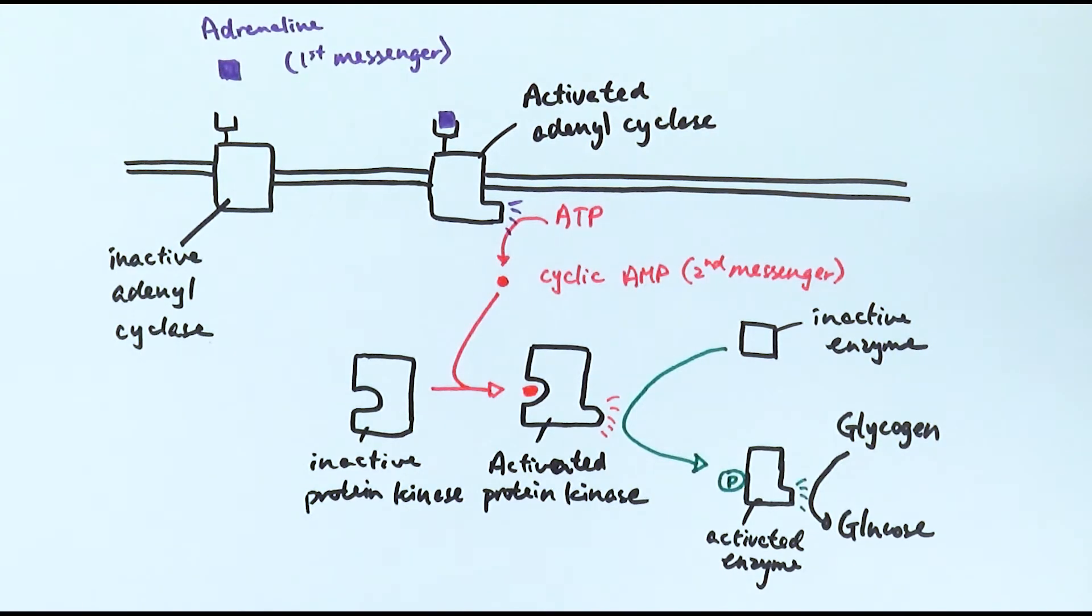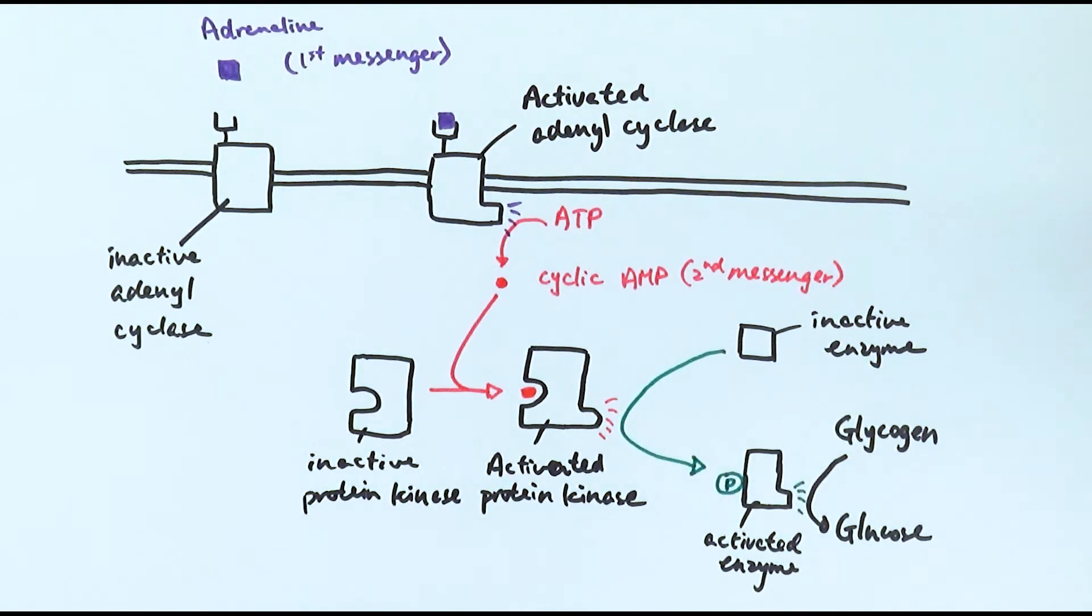The cAMP will then bind to protein kinases and activate them to phosphorylate and activate other enzymes inside the cell. Those activated enzymes can then go on to activate more enzymes or to do the actual action that they are supposed to do, for example converting glycogen to glucose. This is the action of adrenaline.